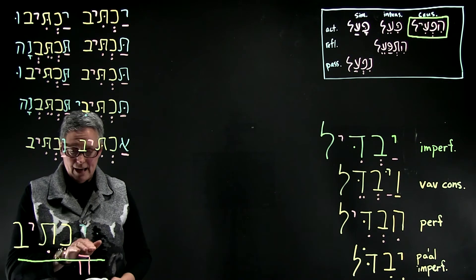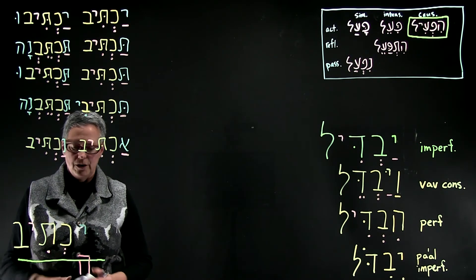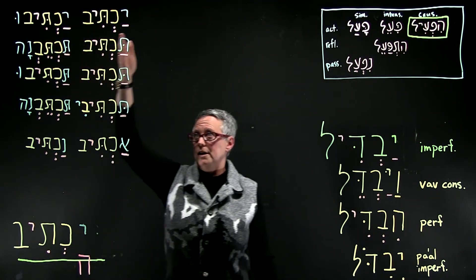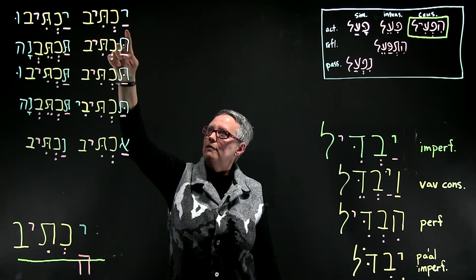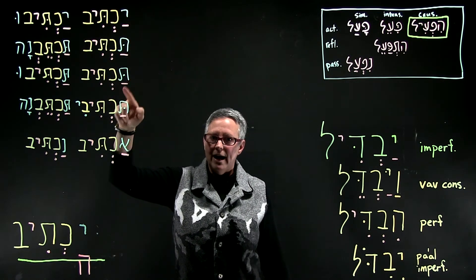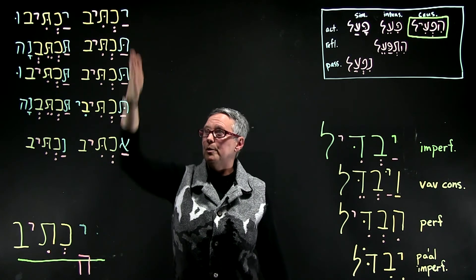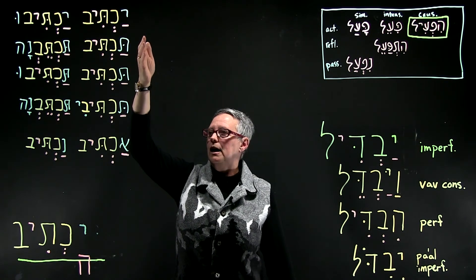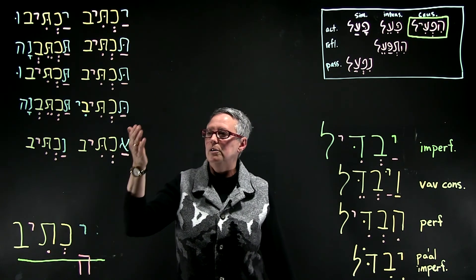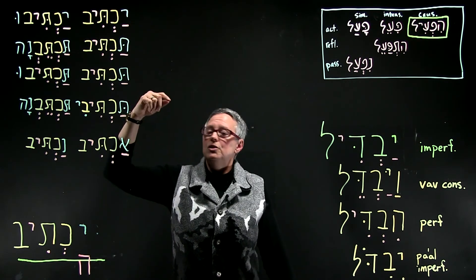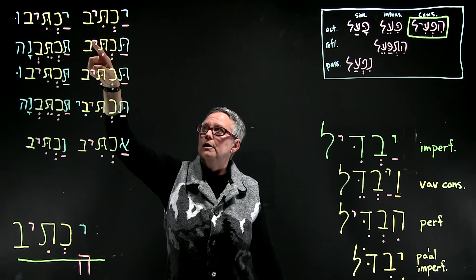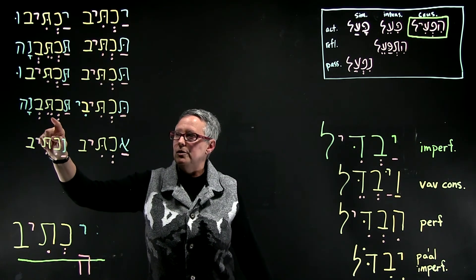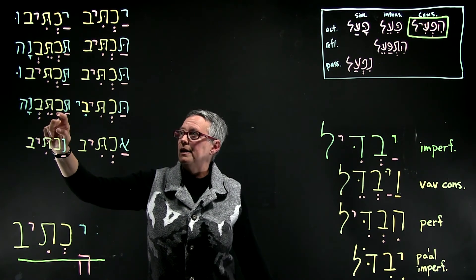You have the patach under the prefix, and you have the hiriq yod. Let's take a look at the paradigm for the Hi-feel imperfect. Notice that on every single word you get that patach under the prefix, whatever the prefix is. We use the third masculine singular as a hammer, but of course it can be a tav, nun, or aleph as well. Also notice how often you see the hiriq yod between the second and third root letter, except in the feminine plural forms where you see a tsere between the second and third root letter.